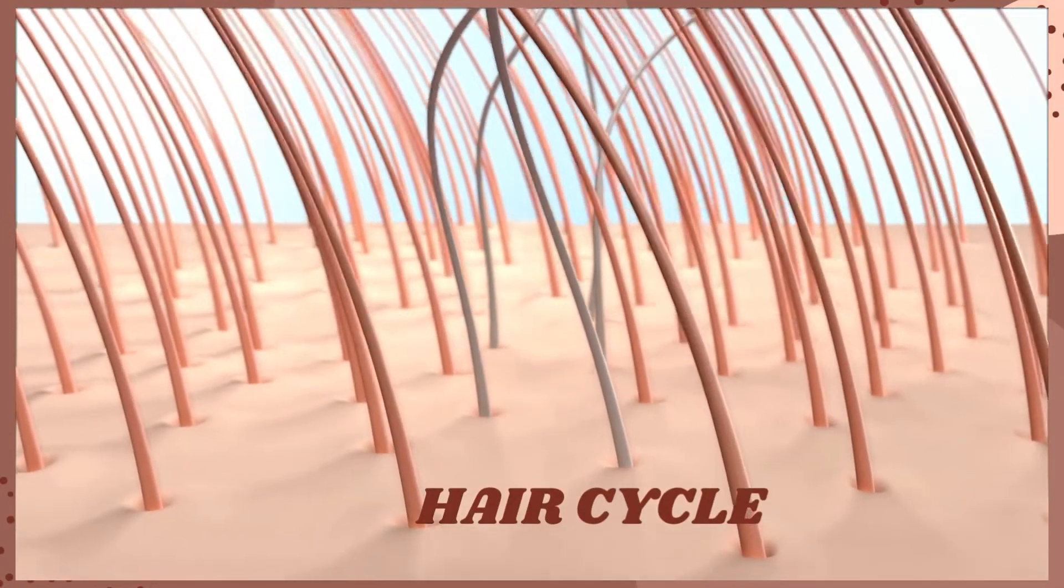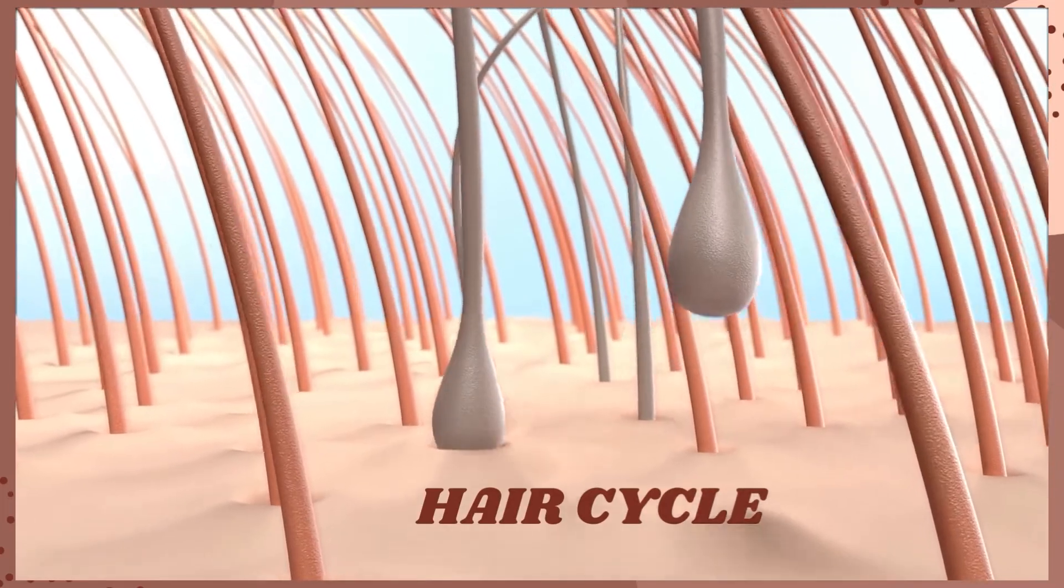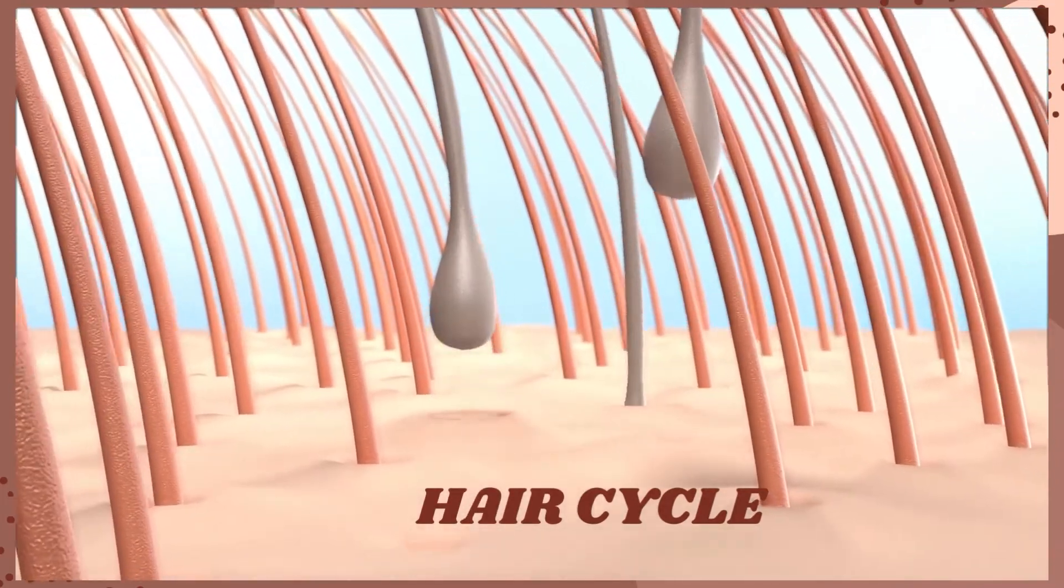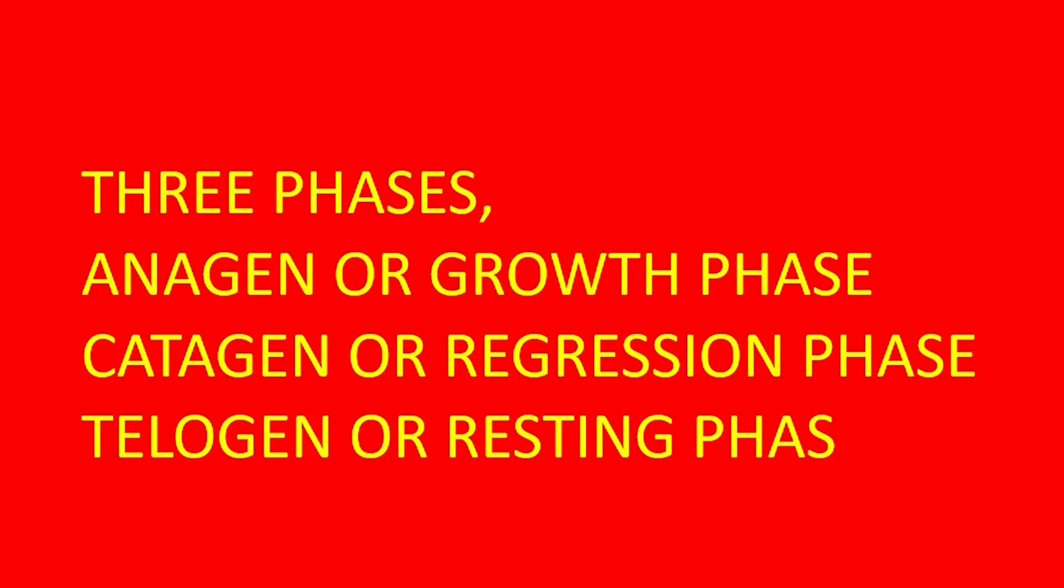To understand how hair grows, let's look at the hair cycle and its different phases. Natural hair growth cycle has three phases: anagen or growth phase, catagen or regression phase, and telogen or resting phase.